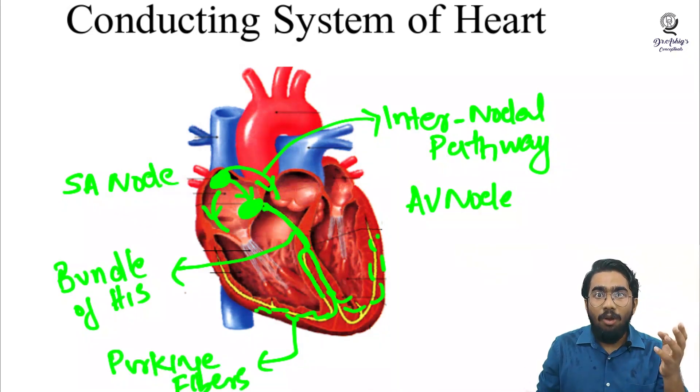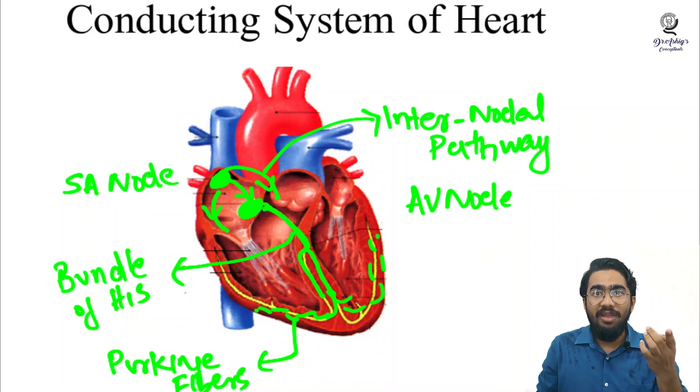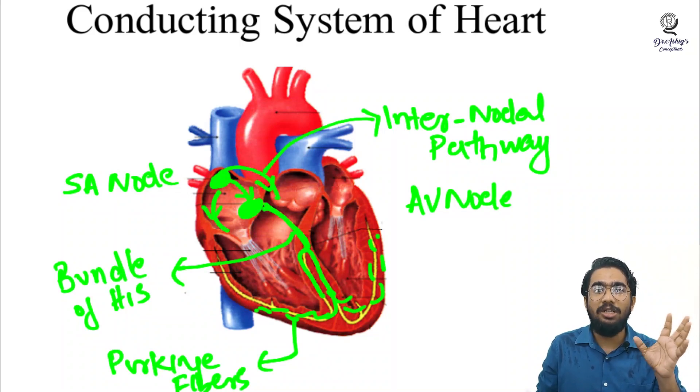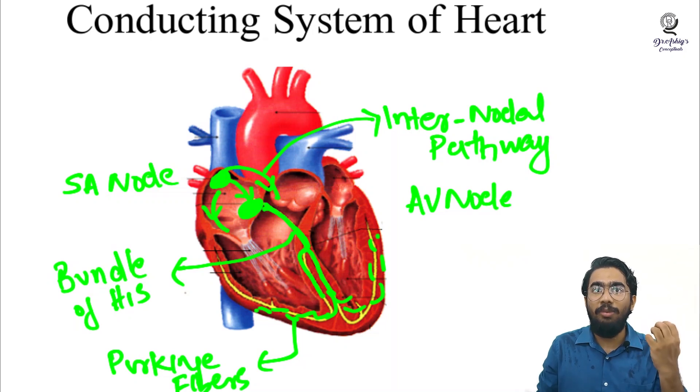So the SA node, the internodal pathway, the AV node, the bundle of His, and the Purkinje fibers are the parts of the conducting system of the heart. Let's see how it all works.